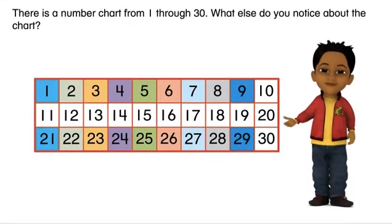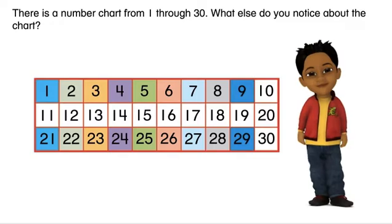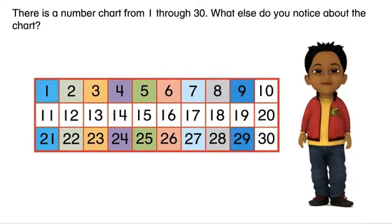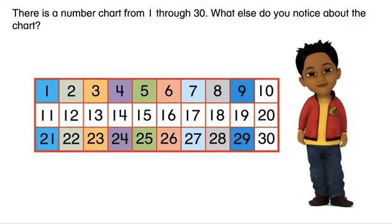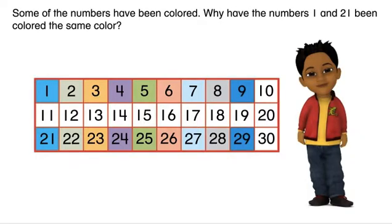There is a number chart from 1 through 30. What else do you notice about the chart? Some of the numbers have been colored.